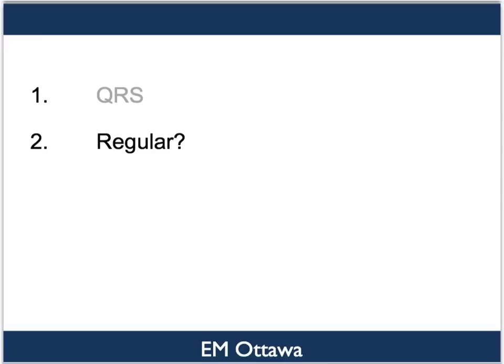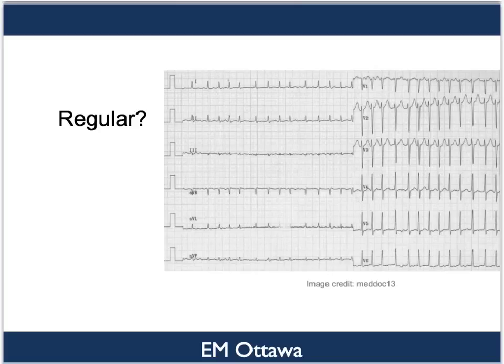Next, regular versus irregular. This refers to whether there is a fixed distance between the QRS complexes. Most of the time it is pretty obvious whether the rhythm is regular or irregular. However, when the heart rate is quite high, sometimes the irregularity is subtle and it might be best assessed by mapping out the individual QRS complexes with a piece of paper.